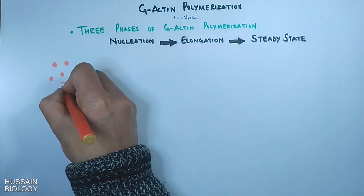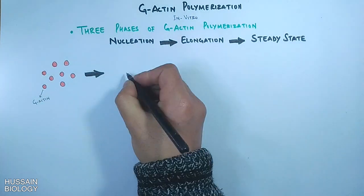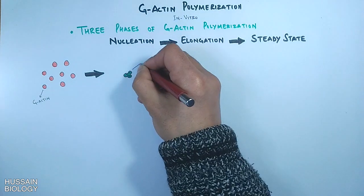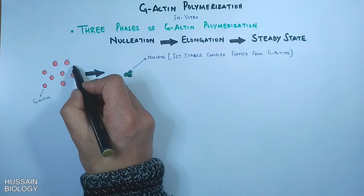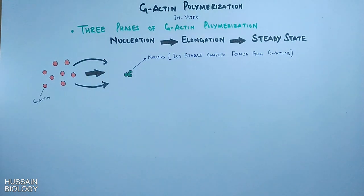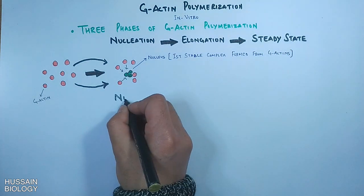In this diagram we can see we have G-actin monomers and few monomers stick together, or we can say nucleate together, to form the first stable complex. As we can see in this diagram, few monomers bind together and form nucleus, and this step is the nucleation step of polymerization.